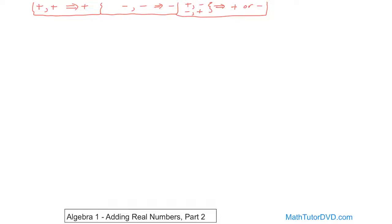All right, enough talking — let's get some more practice. What if you have seven plus 10? I know you're laughing because this is such a simple problem, but we're using these rules. Seven plus 10 is positive plus positive, so the answer will always be positive, and you just add those together. You get 17, and the answer is positive, just like we've always said.